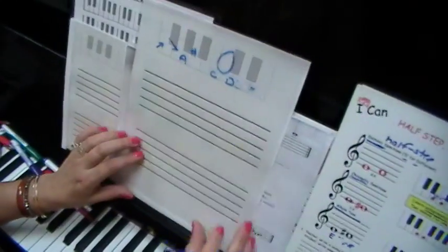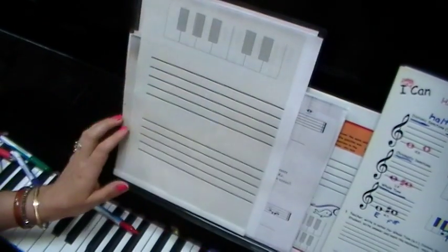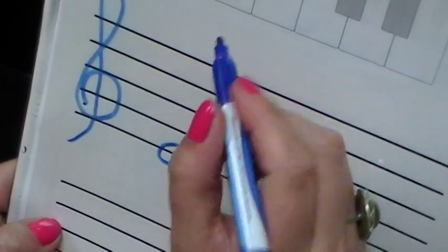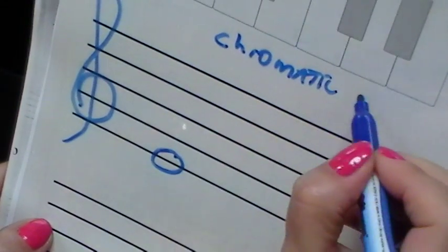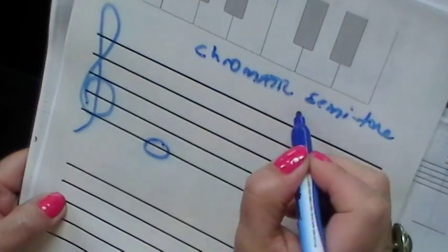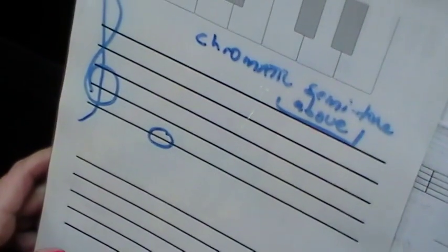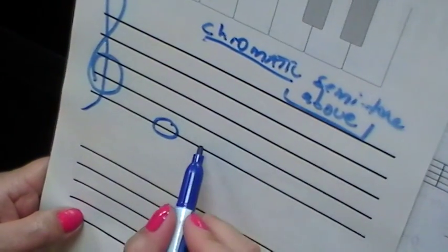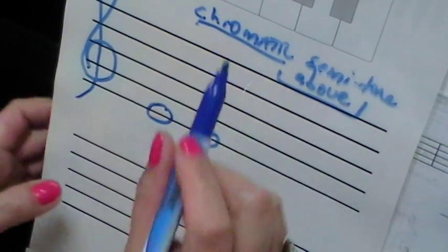I'm going to give you a type of question that you can also get asked. They will say to write a chromatic semitone above. So for instance, let's do this in a treble clef. We're going to loop around. Here's the note they give you. And they'll say, write a chromatic semitone above. Read the question carefully because look to see if it says above or below. A lot of students fail to read the full question correctly. So what would we do?